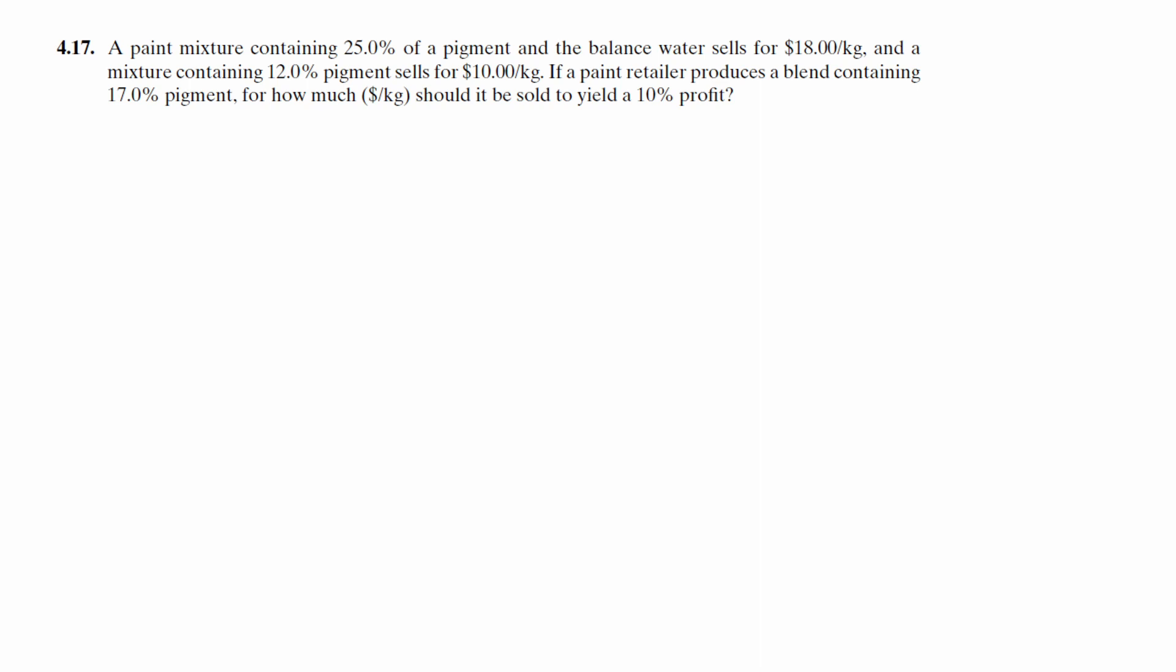A paint mixture containing 25% of a pigment in the balanced water sells for $18 per kilogram, and a mixture containing 12% pigment sells for $10 per kilogram. If a paint retailer produces a blend containing 17% pigment, for how much should it be sold to yield a 10% profit?